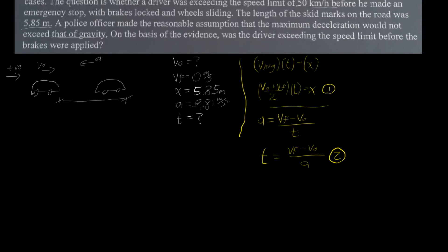How can we solve this and find the initial velocity? We have two unknowns: initial velocity and time, but we have two equations. In equation one, the unknowns are initial velocity and time. In equation two, the unknowns are also time and initial velocity. So we can substitute one equation into the other by isolating one variable, giving us an equation with only one unknown that we can solve for.